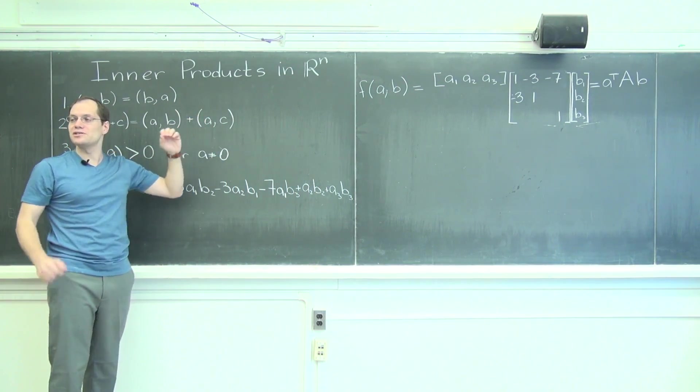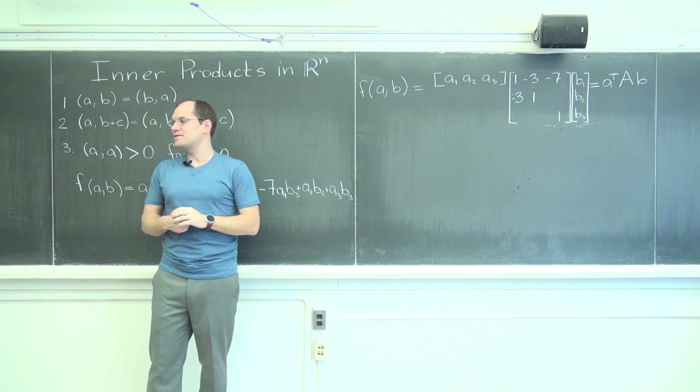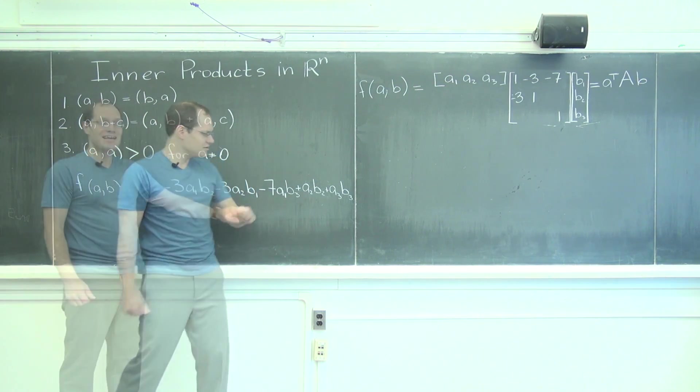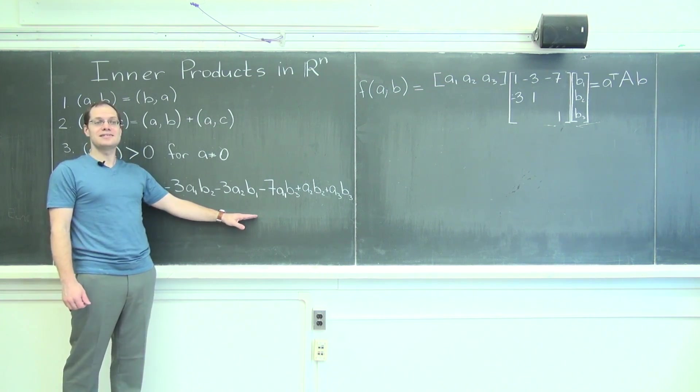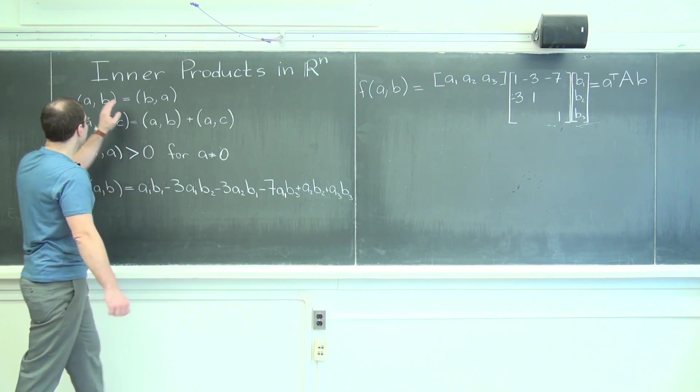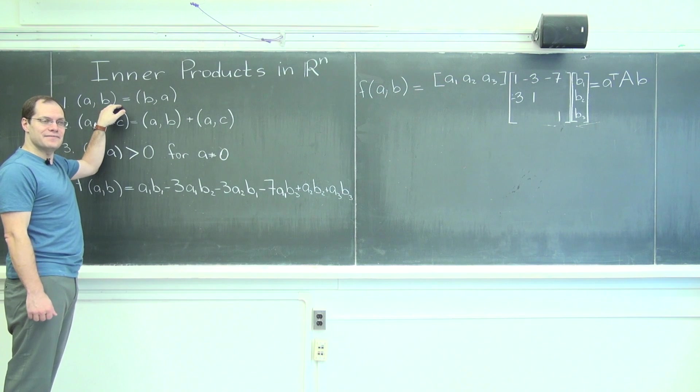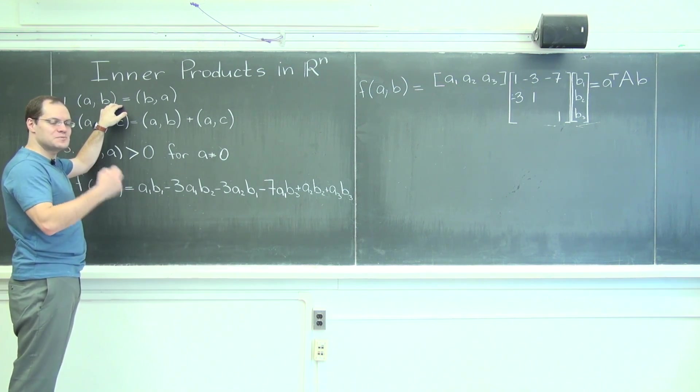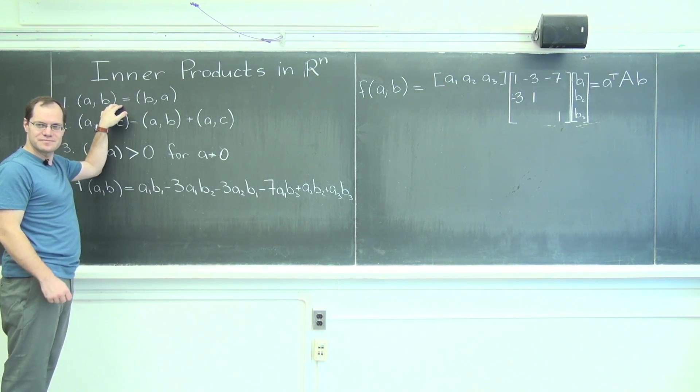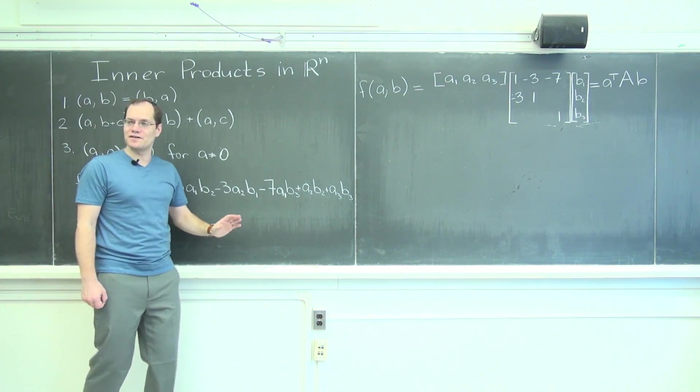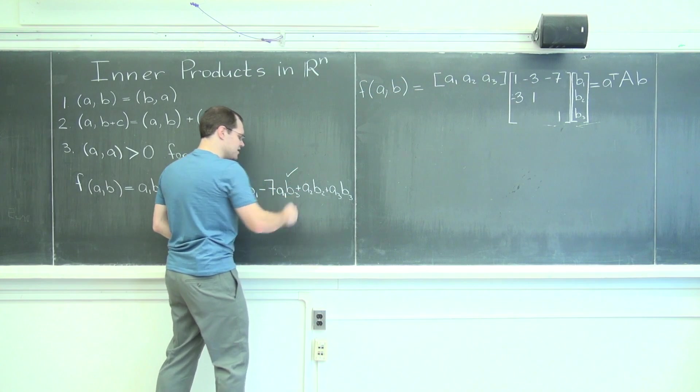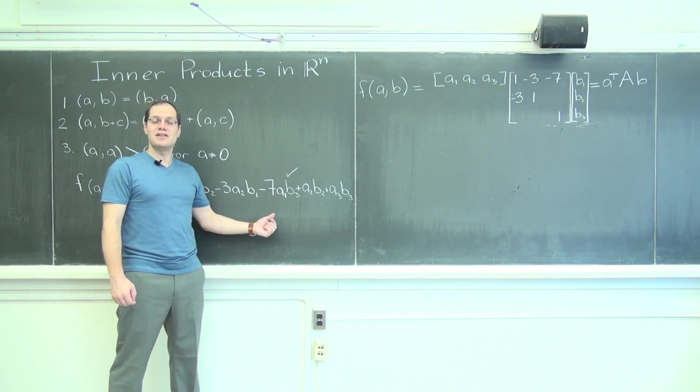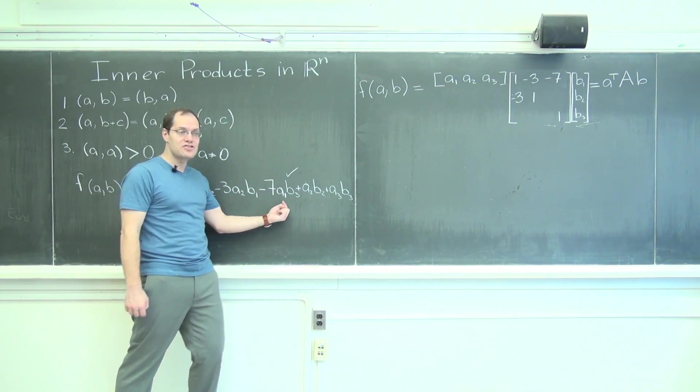Now, the other two properties will simply tell us something about the matrix. Now, is this candidate actually an inner product? And you will say, of course not. It lacks commutativity, which I often misspeak and say symmetry. And of course, symmetry makes perfect sense. And you know that it's not commutative or symmetric because of this term right here. It's not matched up with A3B1.